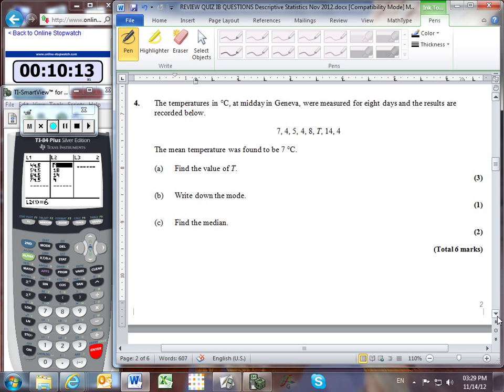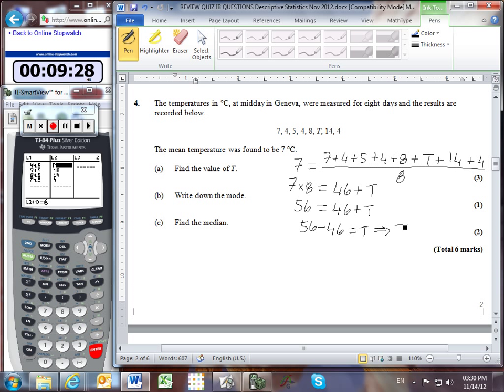Problem 4: temperatures in Geneva measured for eight days, with mean equal to 7. The mean equals the sum of values including unknown temperature T, divided by 8. Multiplying both sides by 8 gives 56. Since 7 plus 4 plus 5 plus 4 plus 8 plus 14 plus 4 equals 46, then 56 equals 46 plus T, so T equals 10.